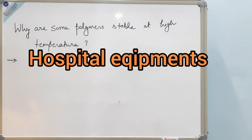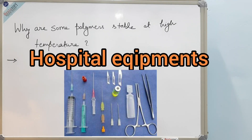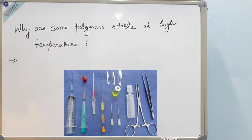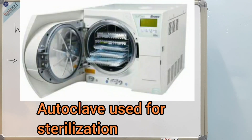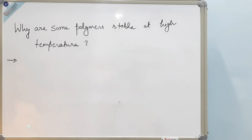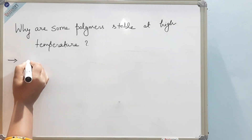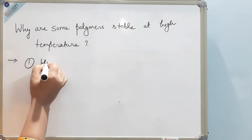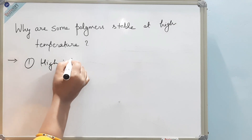Think of hospital equipment used for processes like sterilization — any idea about the kind of polymers used in them? As they need to withstand high temperatures, some polymers are stable at very high temperatures. Now we'll look at the qualities of these high-temperature polymers. The first quality is that all of them have a high intermolecular force.